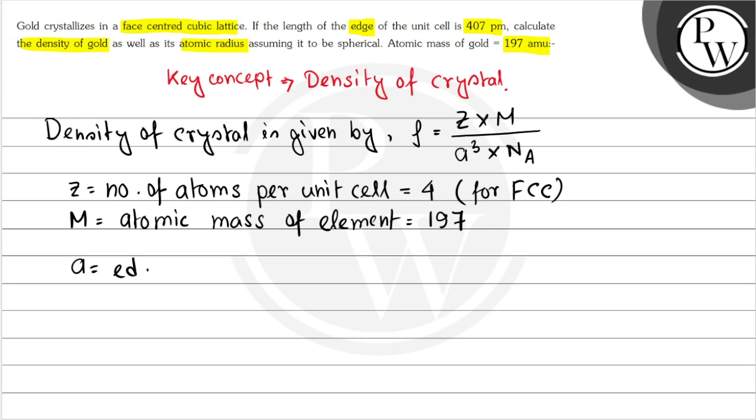A is the edge length of the unit cell, which is given as 407 picometer, which equals 407 times 10 to the power minus 10 centimeter. And N_A is Avogadro's number, that is 6.023 times 10 to the power 23.